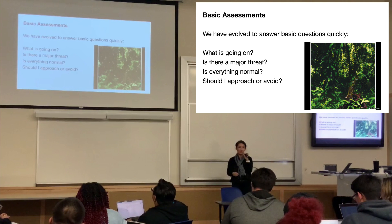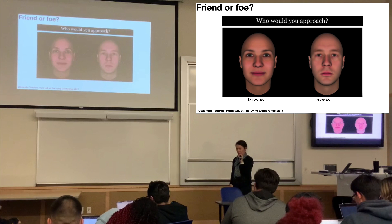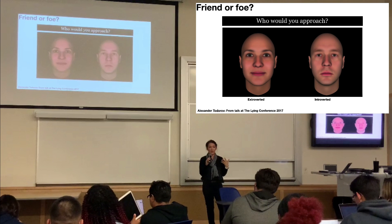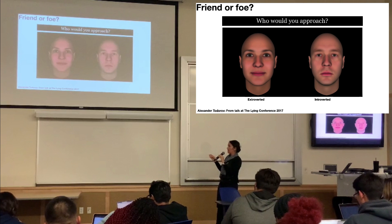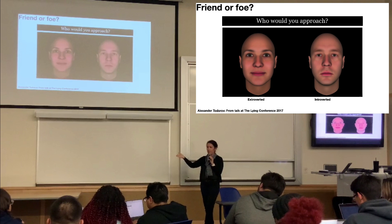One of the gut-level decisions we make in the course of a second is the assessment of friend or foe, which is particularly interesting because we can make those decisions within a millisecond of seeing someone's face. We make all sorts of assumptions just based on the face. There is a massive amount of work that looks at how someone's face influences how you interpret them and how you understand their value or potential in the world.